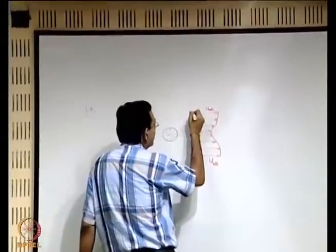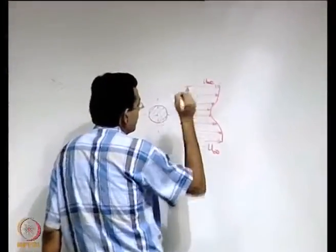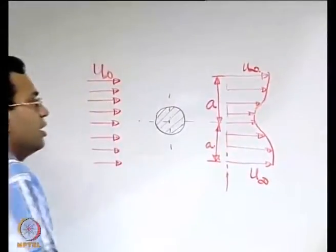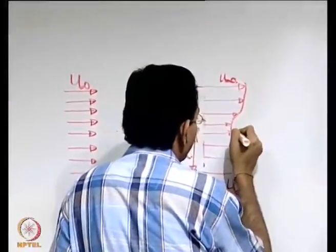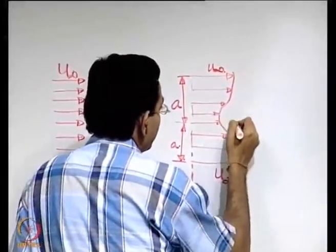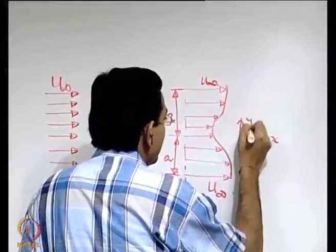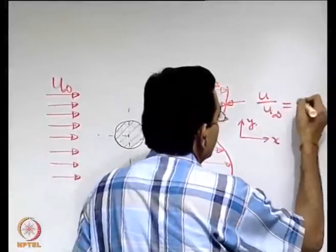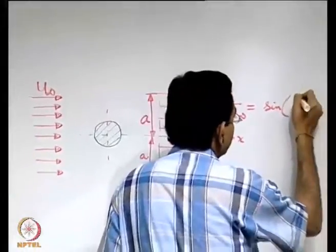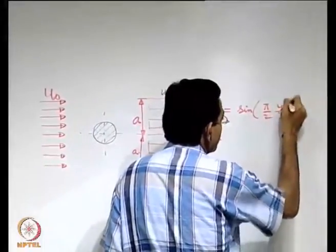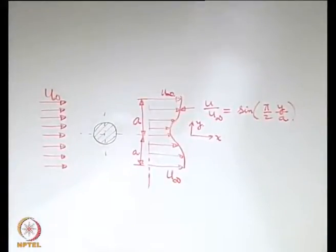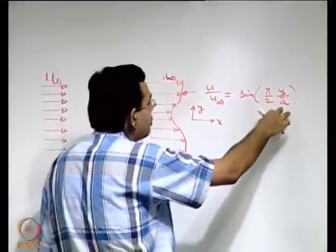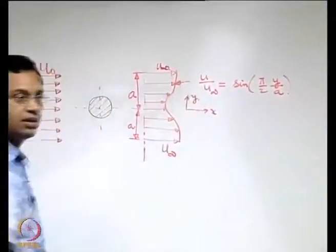Let us say that the height at which the velocity comes to almost u-infinity is 'a', and the velocity profile is given in terms of x and y coordinates, where x is the axial direction and y is the transverse direction. The profile is given by u/u-infinity = sin(...). Not that it has to be exactly this — this is just an example. We are trying to satisfy the condition that when y equals a, u equals u-infinity.